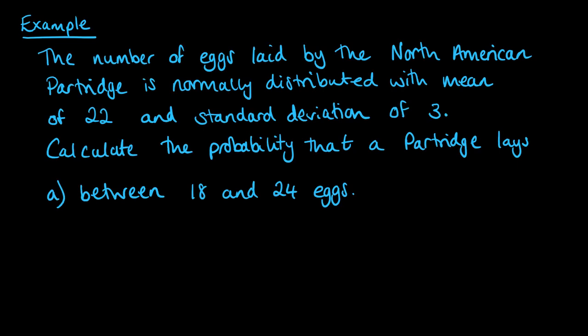We've got the North American partridge that lays eggs, which we can define the number of eggs as being normally distributed with a mean of 22 and a standard deviation of 3. From there, we can calculate some probabilities.